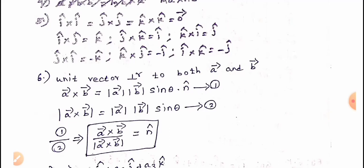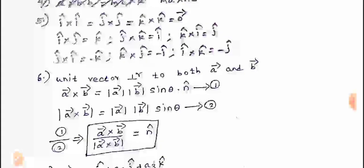Unit vector cross products: i cross j equals k, j cross k equals i, k cross i equals j. If the order is changed: j cross i equals minus k, k cross j equals minus i cap. j cross k equals i cap, k cap cross j cap equals minus i cap, k cap cross i cap equals j cap, and i cap cross k cap equals minus j cap.